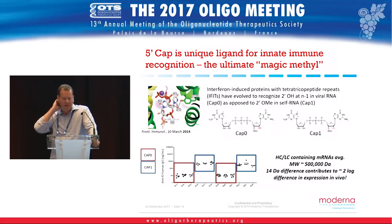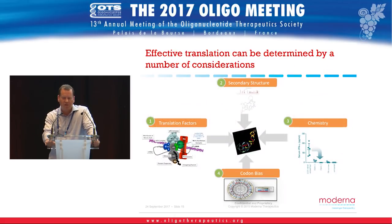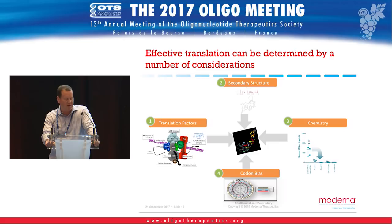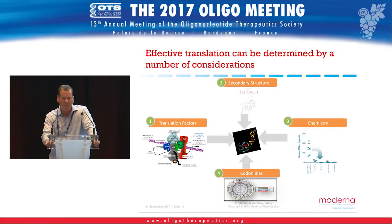Beyond innate immunity, you also have to maximize protein expression. There are different considerations for sequence engineering: secondary structure and chemistry are important, and my colleague Ian McFadyen will discuss those later in the week. Critically, if you're relying on chemically modified messenger RNA to avoid innate immune responses, you introduce nuance into sequence engineering that needs to be addressed to maximize expression.